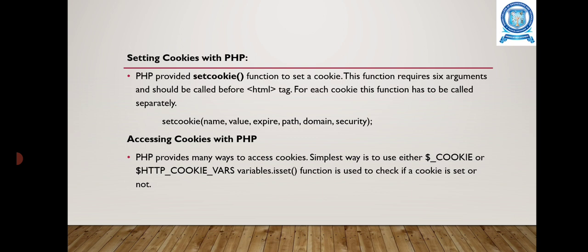Setting cookies with PHP: PHP provided setCookie function to set a cookie. This function is defined as setCookie of name, value, expire, path, domain, security. Name sets the name of the cookie and it is stored in the environmental variable called HTTP cookie variable. Value sets the value of the named variable. Expire specifies the future time in seconds, that is, minutes and seconds that are specified in the particular cookie.